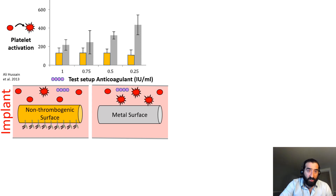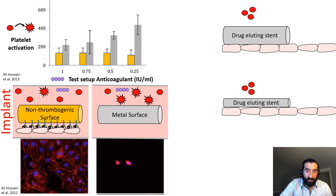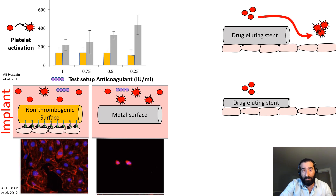Other technologies include the addition of certain proteins or signaling molecules to improve the adhesion of cells. And in drug-eluting stents, as you make the struts thinner and thinner, they become less thrombogenic.